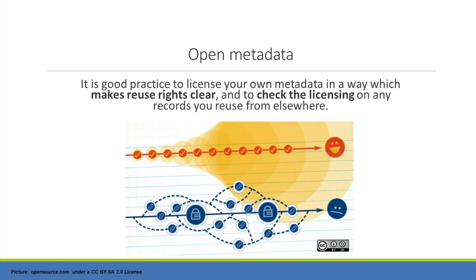Open licensing of metadata is often implied or assumed rather than formally applied. Traditionally, libraries have shared bibliographic records freely and they are not seen as copyrighted. However, cataloguing agencies and library vendors do sometimes assert copyright on records they provide. Substantive metadata such as abstracts and subject indexing may be especially seen as subject to copyright. So good practice is to licence your own metadata in a way which makes reuse rights clear and to check the licensing on any records you reuse from elsewhere.